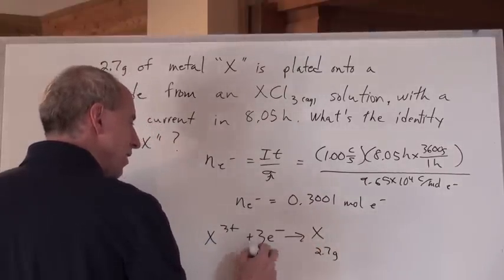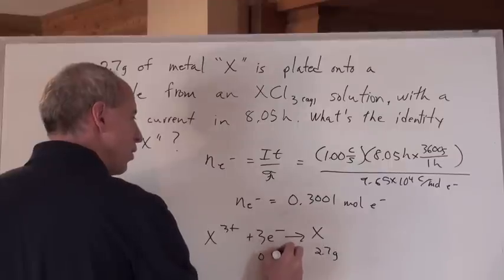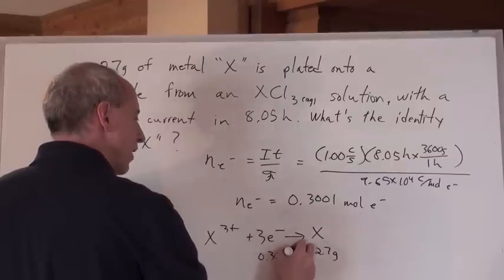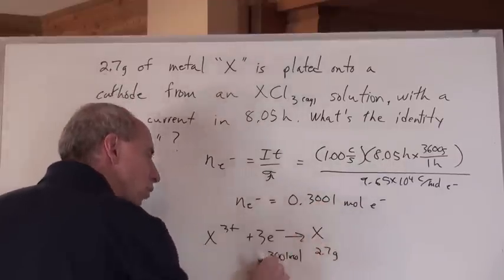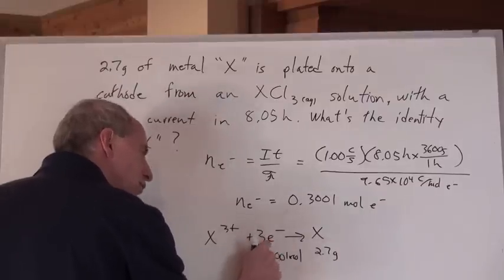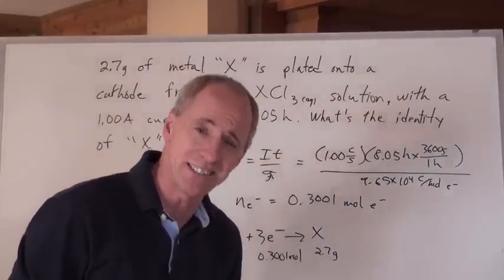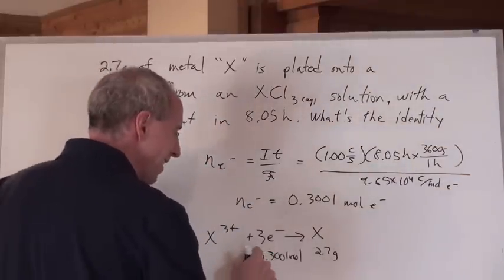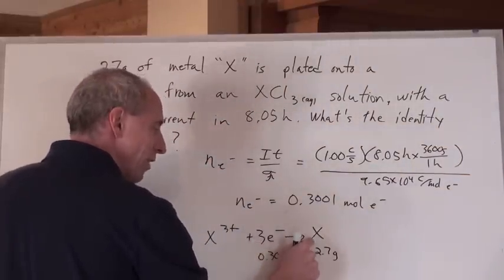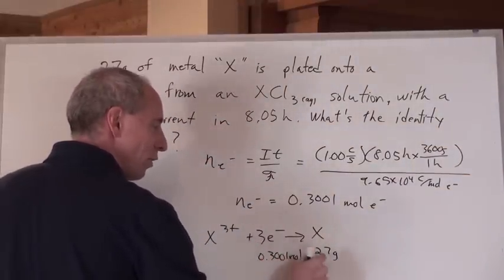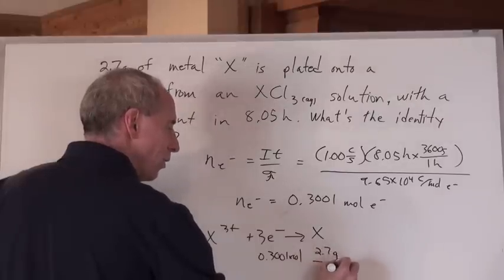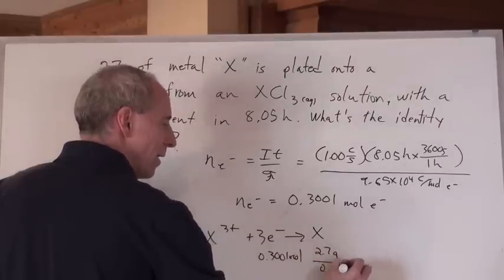What's the number of moles of electrons here? 0.3001 moles of electrons. And if that's how many moles of electrons you have in a three to one ratio - do I have to do the stoichiometry or can you see it? It's going to be for every three here you have one here. So for every 0.3 here you have 0.1 here. And you've got 0.1 moles of that metal X.